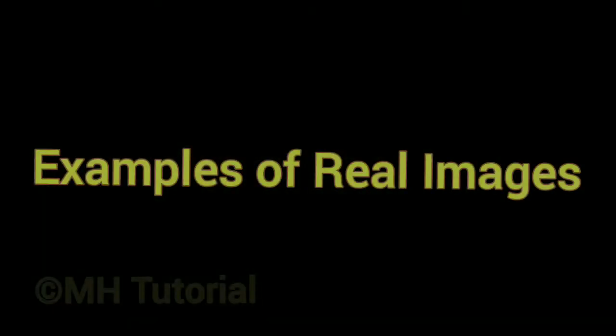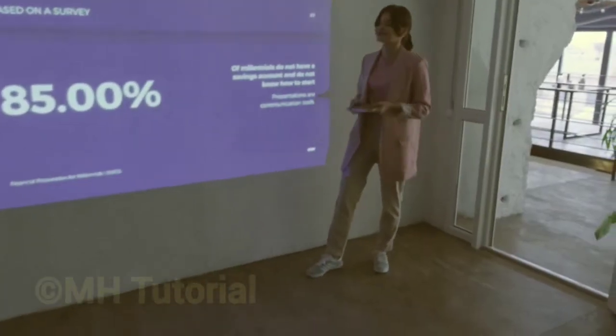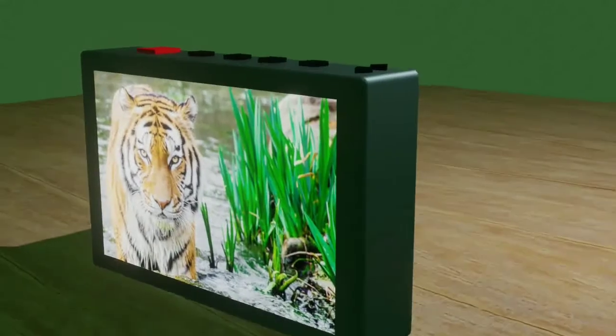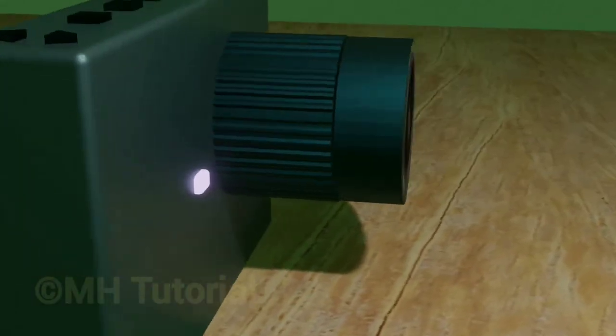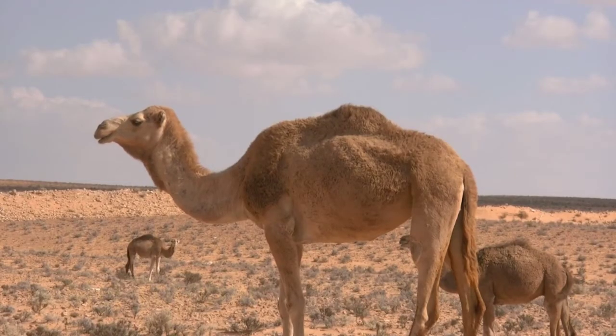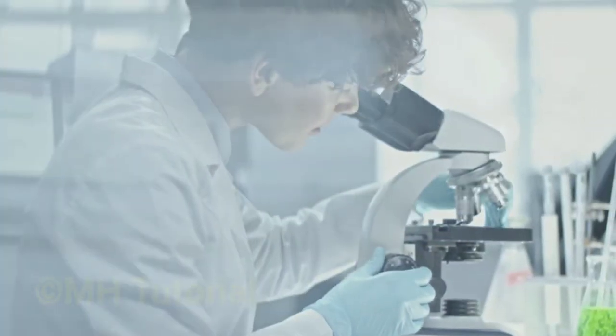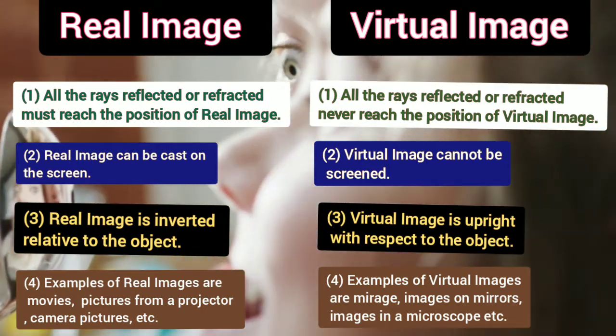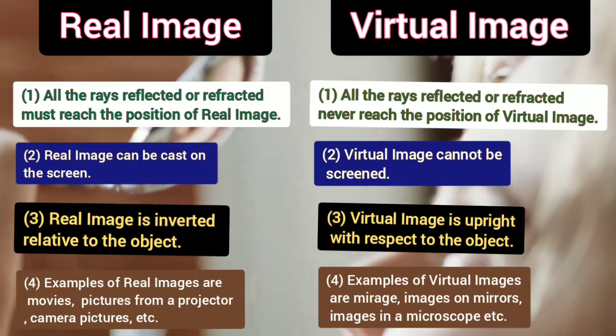Examples of real images are screen images in a theater, pictures from a projector, images formed inside a camera, and so on. Examples of virtual images are a mirage in a desert, your reflection in a mirror, images formed inside a microscope, and so on. Hope you understand and have built a clear concept on the topic. If you like the video, give a like and encourage us in our work. Thanks for watching the video till the end.